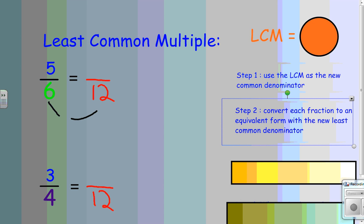I have six times what equals twelve? Yes, two. So, I must also multiply the top number so that we make an equivalent form of this fraction. And that will give me a numerator of ten.